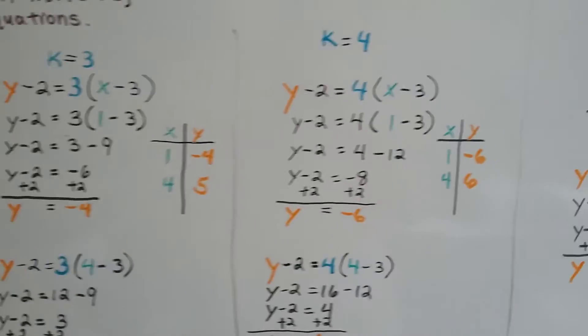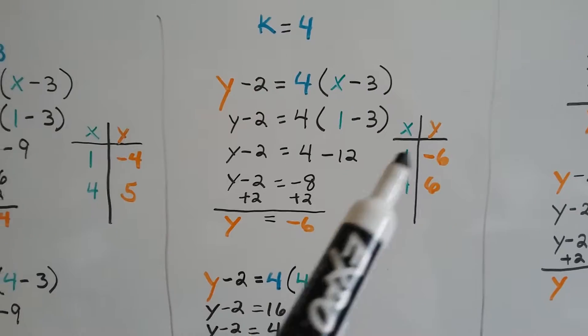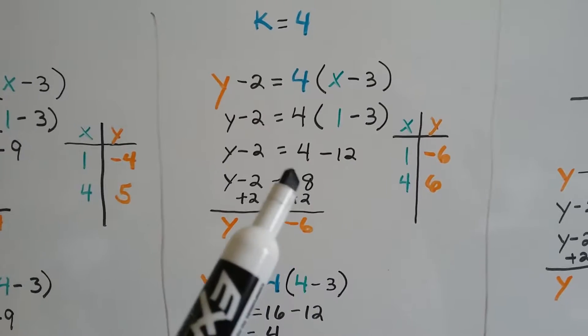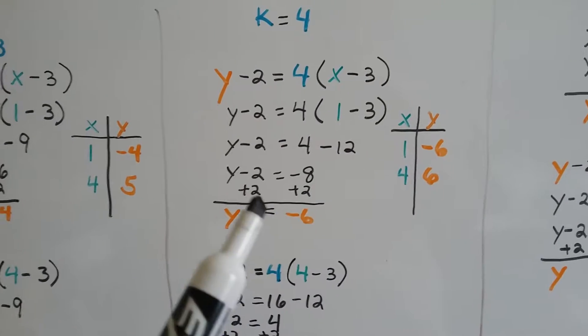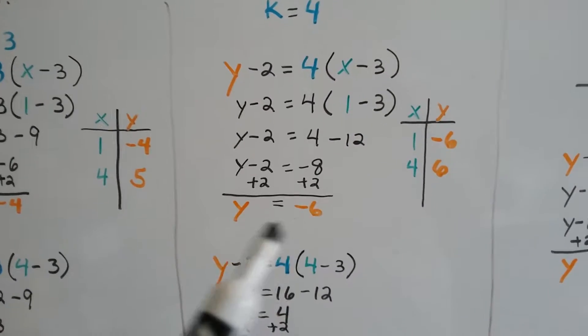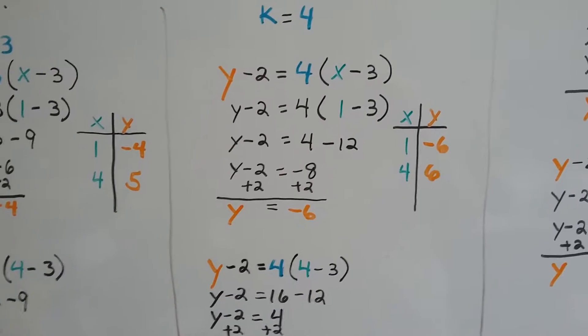Now we're going to do it where k equals 4. We're going to do exactly the same thing as we did on the other ones. We're going to set x to equal 1, do our math. We've got 4 minus 12, that's negative 8. We're going to add the 2 to each side and we get y equals negative 6. So when x is 1, y is negative 6.